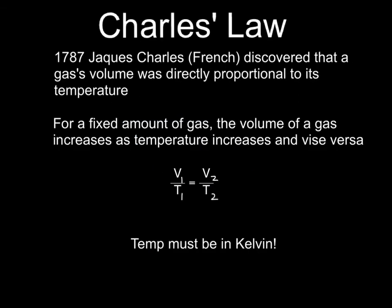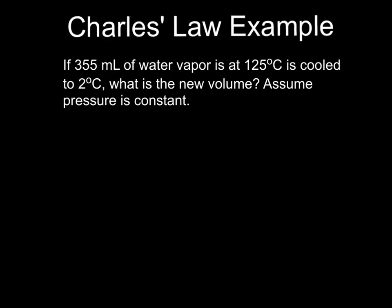The other law we're going to look at tonight is Charles' Law. Charles' Law was demonstrated to you in Stations 2 and 3 with the can and the flask with the balloon. You discovered that as the temperature of a gas increases, its volume increases, and as temperature decreases, its volume decreases. We call this a direct relationship or a direct proportion. In 1787, Jacques Charles, who was a French scientist, discovered this exact same principle, so he gets credited for the law. It tells us that for a fixed amount of gas, volume increases as temperature increases and vice versa. Because this is a direct proportion, the equation is V1 over T1 equals V2 over T2. Keep in mind, temperature must be in Kelvin. Please write this down and make sure you have it because you are held responsible for knowing the equation.